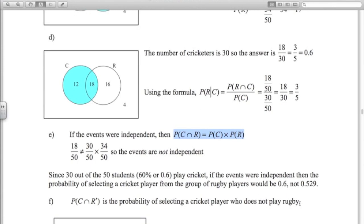Another way you can think of it is since 30 out of the 50 students or 60% of them play cricket, if the events were independent, then the probability of selecting a cricket player from the group of rugby players would be 0.6. But as you can see, it's only 0.529. So not independent.